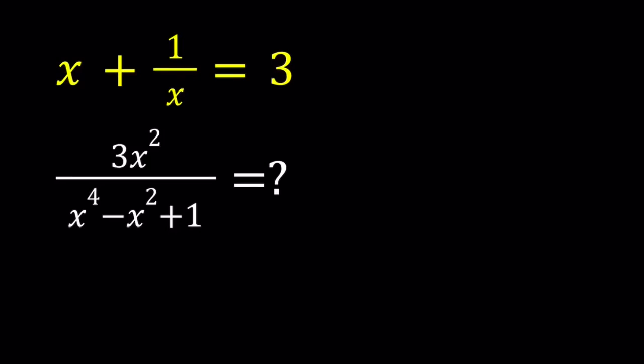Hello, everyone. In this video, we're going to be evaluating an algebraic expression. We're given that x plus 1 over x is equal to 3, and we are supposed to evaluate 3x squared divided by x to the fourth power minus x squared plus 1. I'll be presenting two methods. Let's start with the first one.